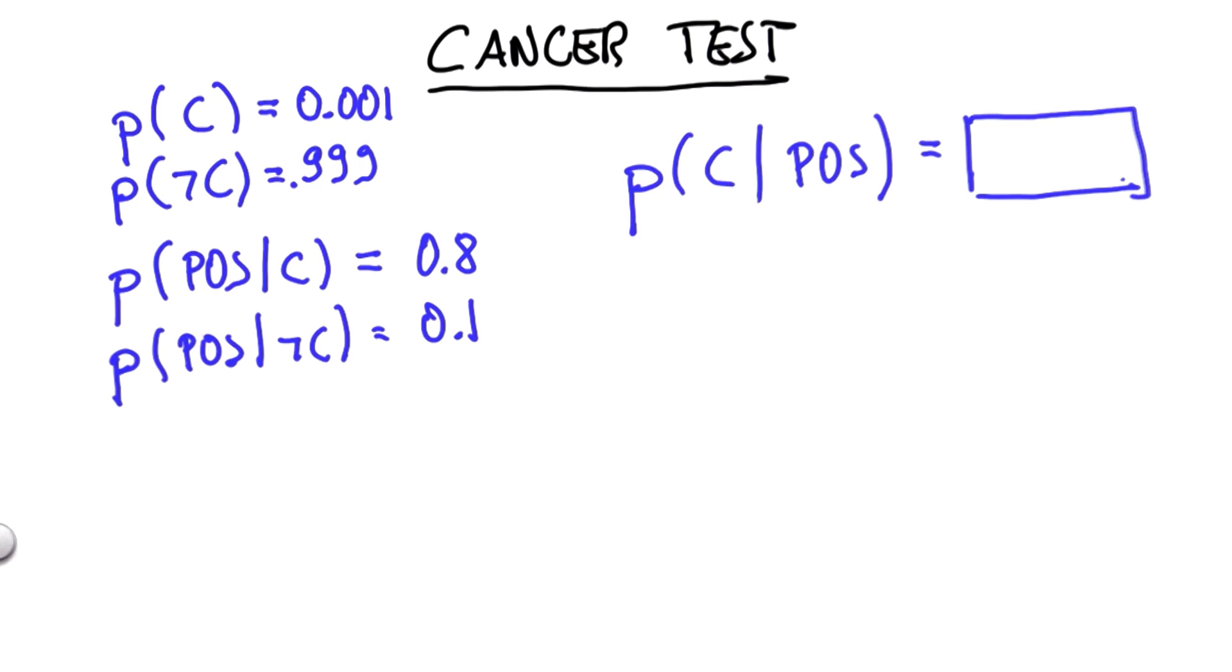Think of the cancer versus non-cancer as the robot position, and think of the positive test as whether the color that you observed is the correct one. It's really Bayes' rule.